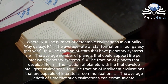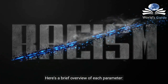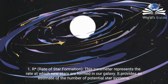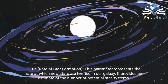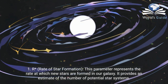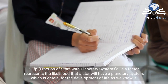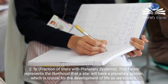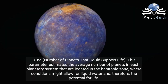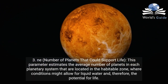Here is a brief overview of each parameter. First, R* — rate of star formation — represents the rate at which new stars are formed in our galaxy, providing an estimate of the number of potential star systems. Second, fp — fraction of stars with planetary systems — represents the likelihood that a star will have a planetary system, which is crucial for the development of life as we know it. Third, ne — number of planets that could support life — estimates the average number of planets in each planetary system.